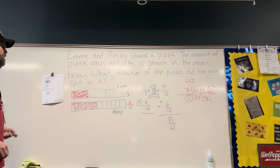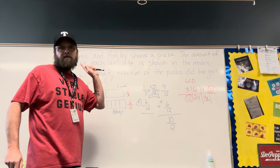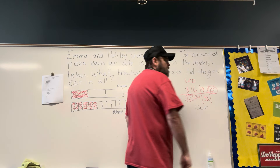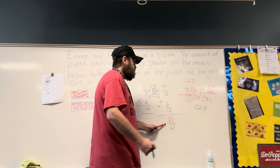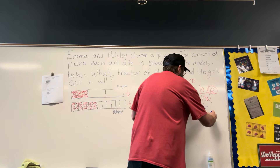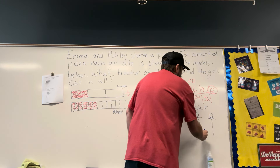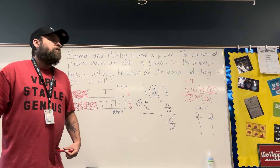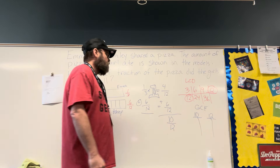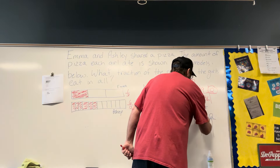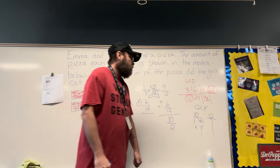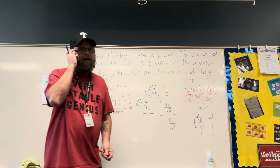But that answer's not on here. That's because we need to find the greatest common factor to simplify these fractions. So I'm going to find all the factors of 10 and all the factors of 12. Neither one of these is a prime number because they're both even, and the only even prime number is 2. The factors of 10 are: 1 times 10 and 2 times 5 — those are the only factors of 10, the only numbers that divide evenly into 10.